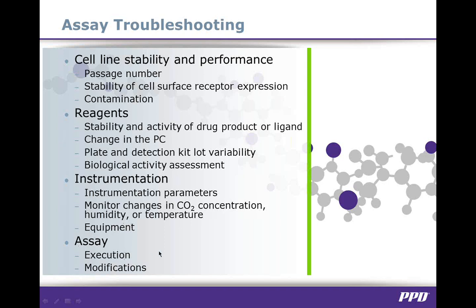The last category relates to assay format and execution: review the method and ensure that steps have not been modified. Ensure that changes in pipetting techniques or dilution schemes of samples and controls have not changed. Consider having the assay executed by a second or more experienced analyst to determine if there is analyst-to-analyst variability. Also look for possible matrix interference if not performed during the development process, and determine potential differences between healthy and diseased subjects, assessing potential matrix-related interfering components.